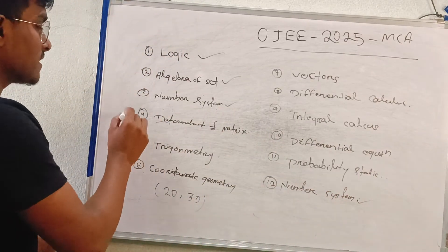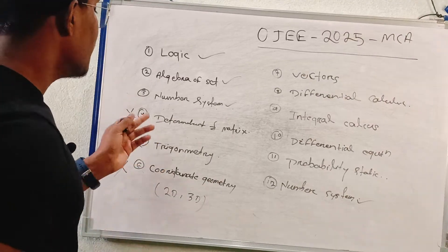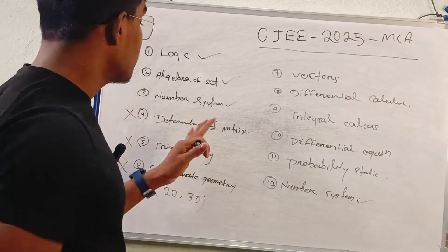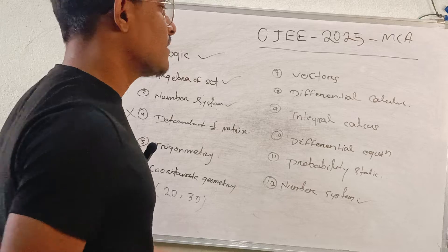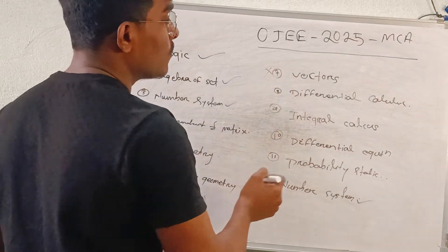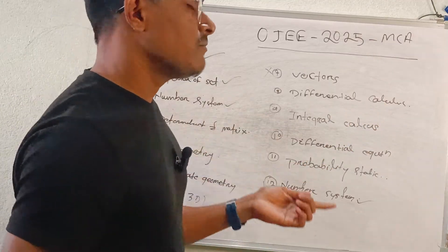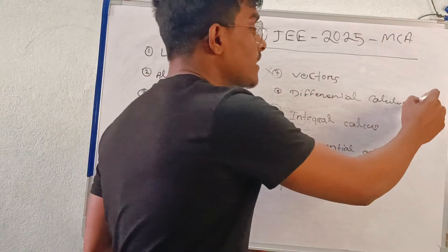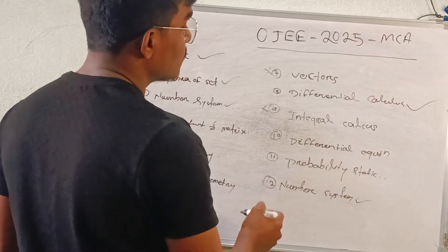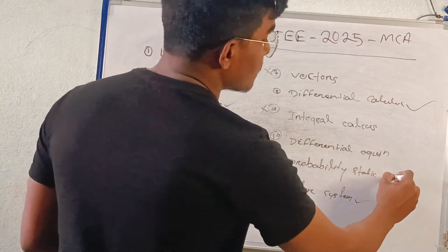Determinant matrix is not necessary. Trigonometry is not necessary. Coordinate geometry is not necessary. Vectors are not necessary. Differential calculus is not necessary. But if you want to cover up, I can suggest. Integral calculus is not necessary. Differential equations is not necessary. Probability statistics is most important.